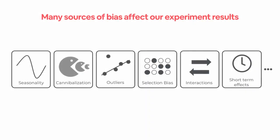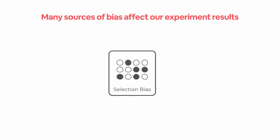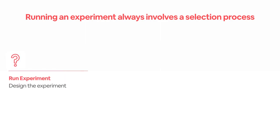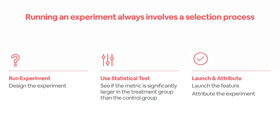Many sources of bias affect our experiment results. In this work, we focus on selection bias. Running an experiment always involves a selection process. First, we design the experiment. Then, we use statistical tests on the metrics we care about. And if we find it successful, we launch the new feature and attribute the experiment.